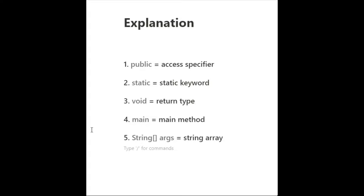Next is `void`. It simply tells JVM that the main method is not returning anything — that is why we use void. Then `main` is just the name of the method, and `String[] args` means a string array. The main method takes a string array as its argument.